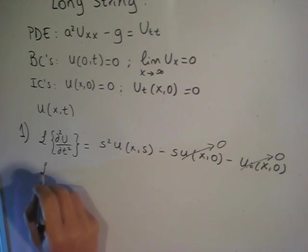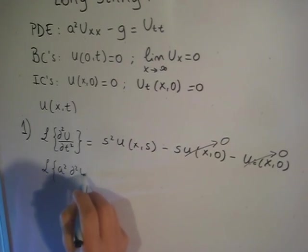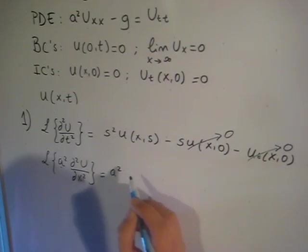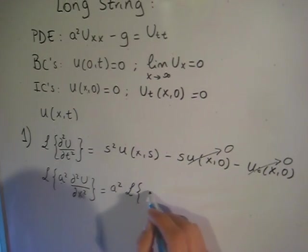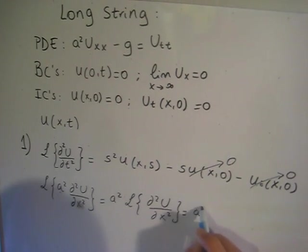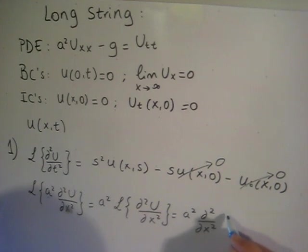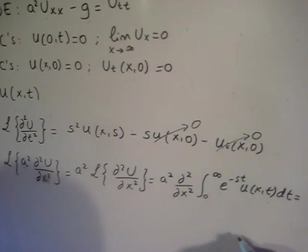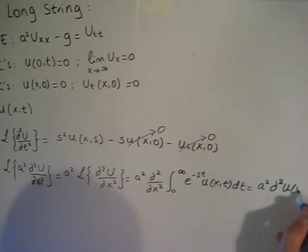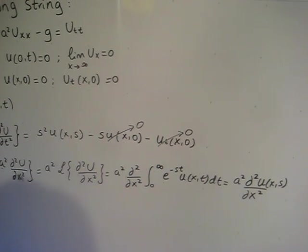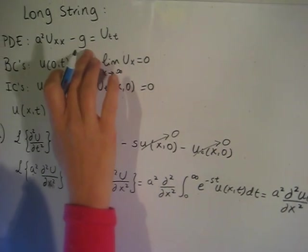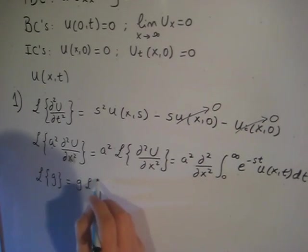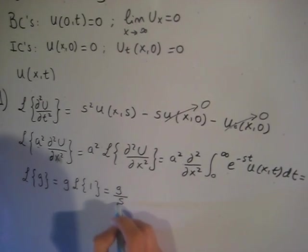Moving to the left-hand side of the PDE, the Laplace transform of a²·d²u/dx² — since a is a constant — is equal to a² times the Laplace transform of d²u/dx², which equals a²·d²U(x,s)/dx². And finally, the third term from the PDE: the Laplace transform of g — g is a constant, so we place it outside — and the Laplace transform of 1 is just 1/s, so we have g/s.